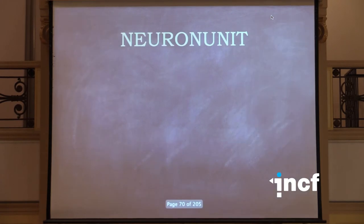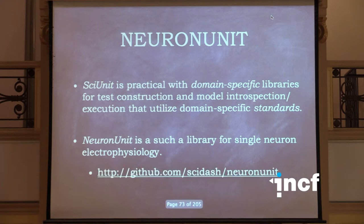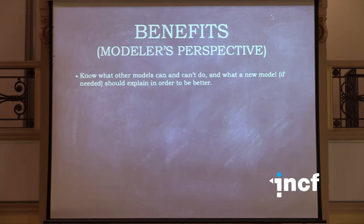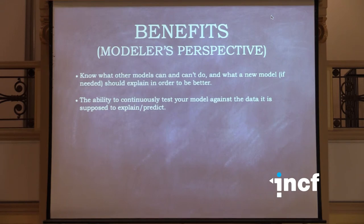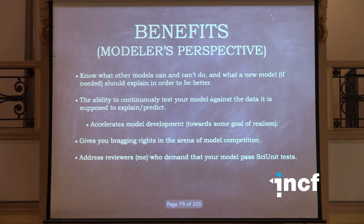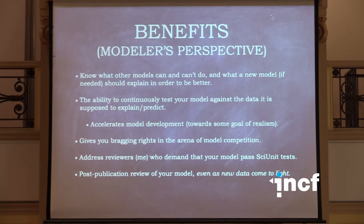That's the basic goal of a project called NeuronUnit. For a particular domain, you want a way of linking those standards together. For single neuron electrophysiology, I have enough understanding of the standards to know what they are and how to link them together — that's what the NeuronUnit project is all about. The benefits: you want to know what previous models can and can't do, so you have a path forward. It'd be nice to do continuous validation during development rather than just creating the model and finding out if it's any good when you get ready for publication — this accelerates model development. And even post-publication, your model should be on Open Source Brain and continuously tested as new data comes out.